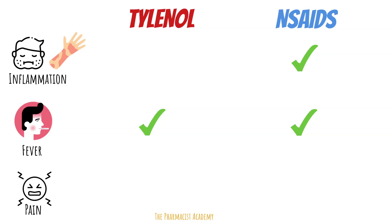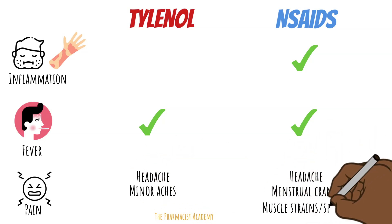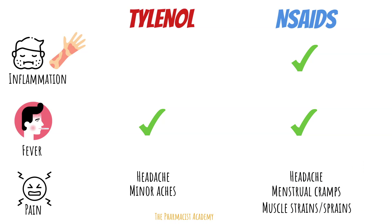Both are good for mild to moderate pain, but it depends on the type. Tylenol is great for headaches and other minor aches and pains. NSAIDs are used for headaches, menstrual cramps, muscle strains and sprains, and also pain due to inflammation like arthritis.